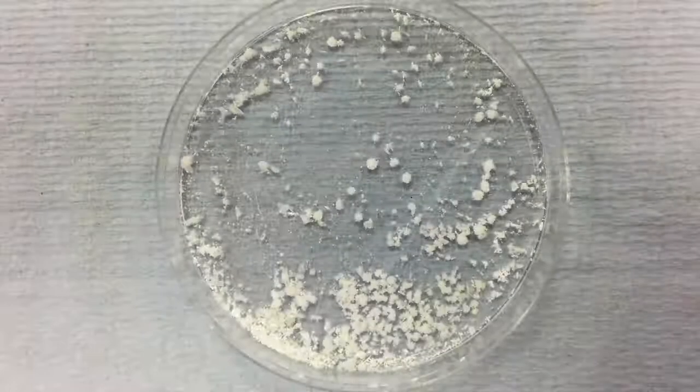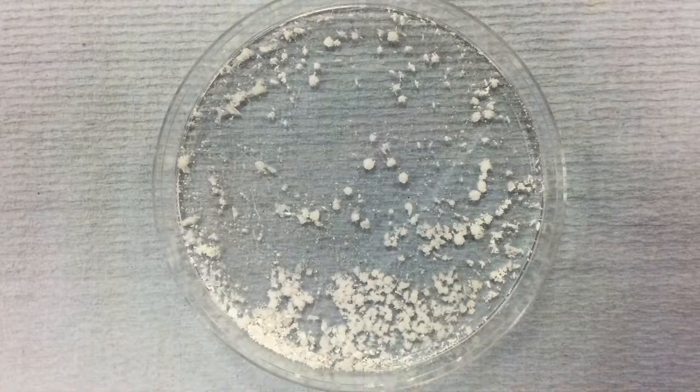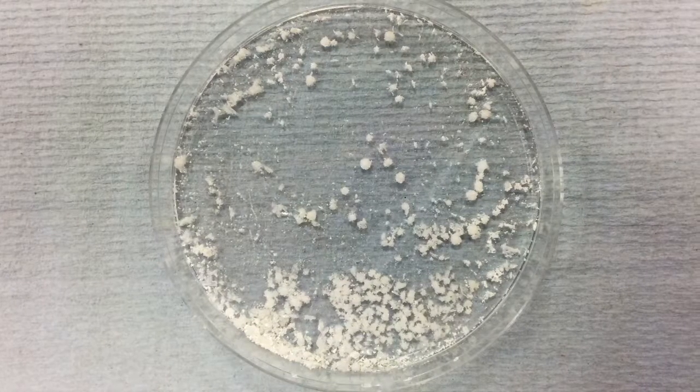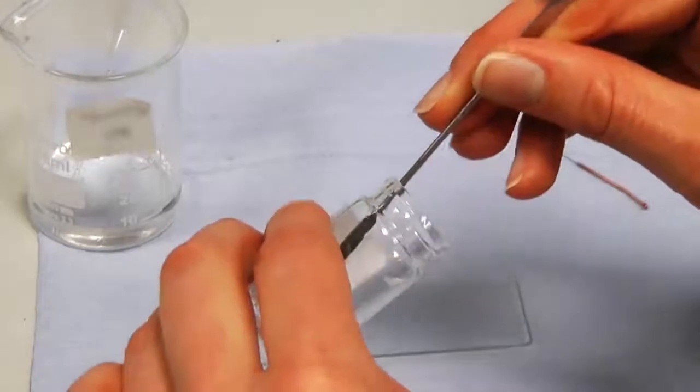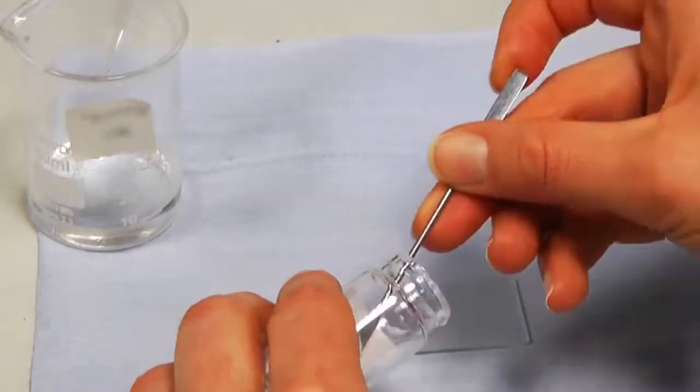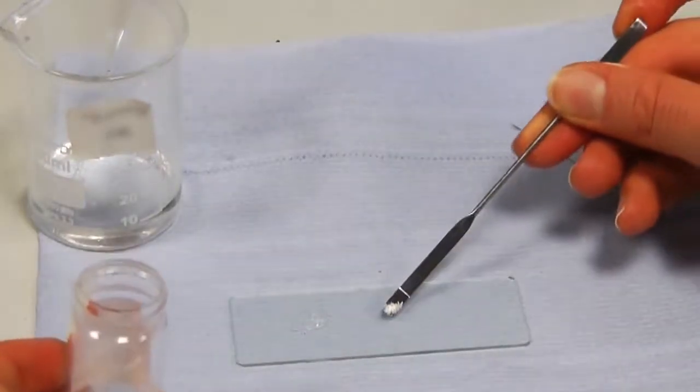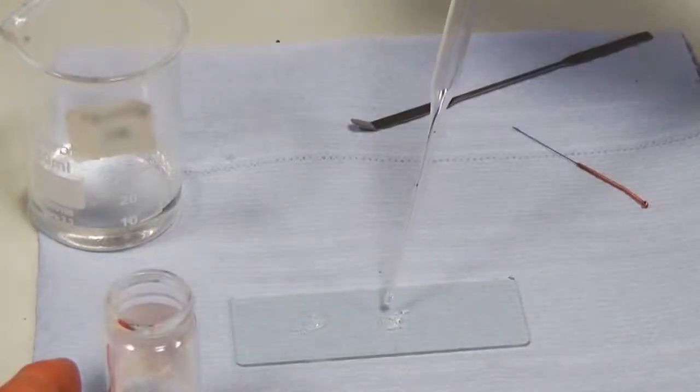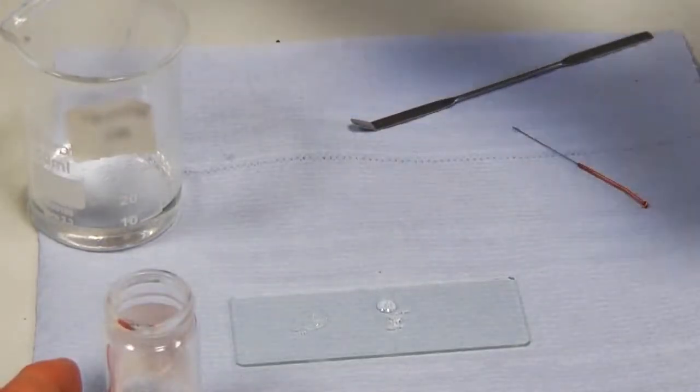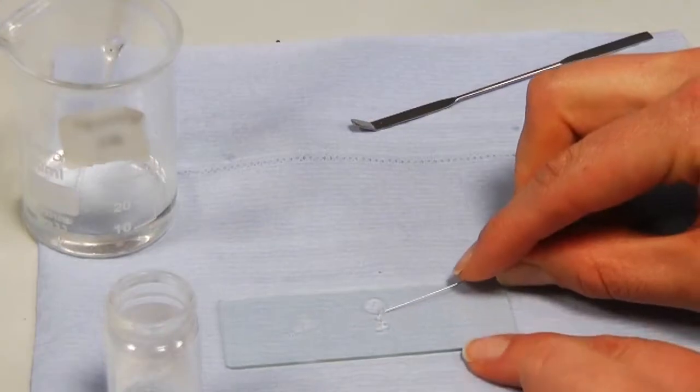First, you will need to recrystallize your sample to obtain single crystals of adequate size for analysis. Once suitable crystals have been obtained, use a spatula to paste a few on a glass slide. Placing a drop of paratone oil onto the crystals will make it easier to manipulate them and select the best candidate.